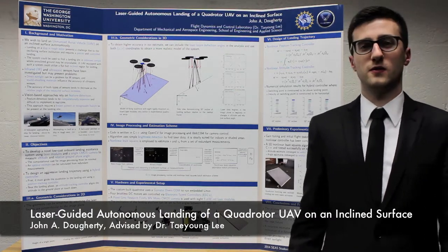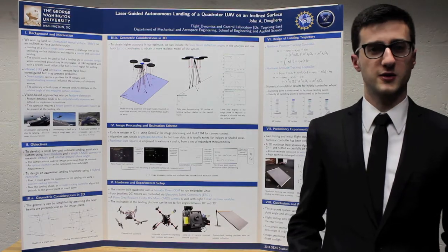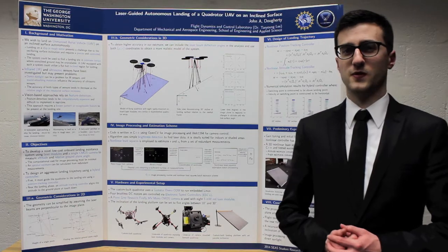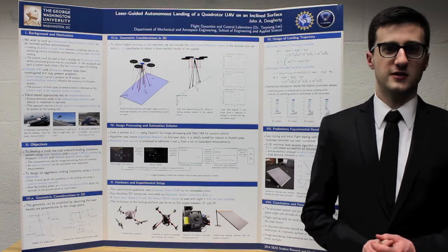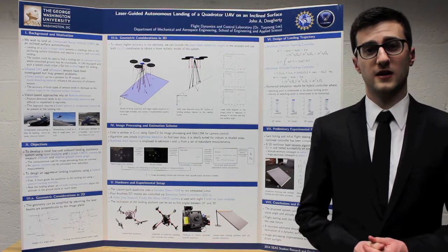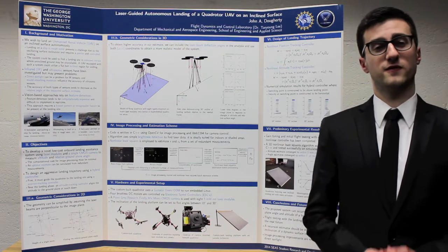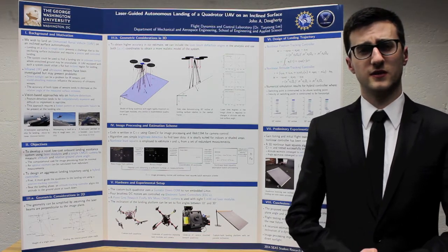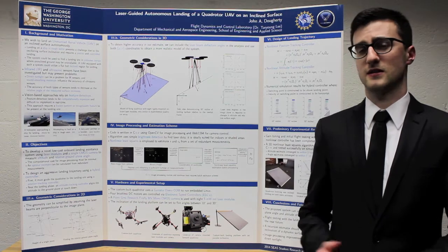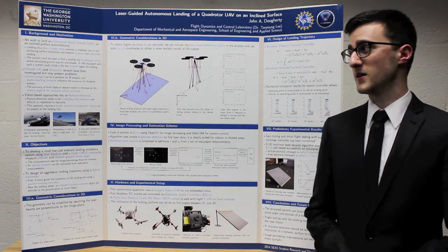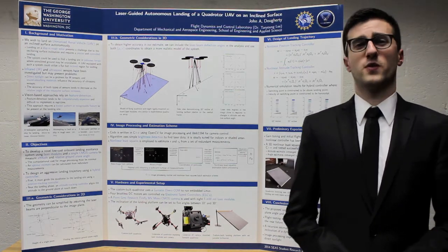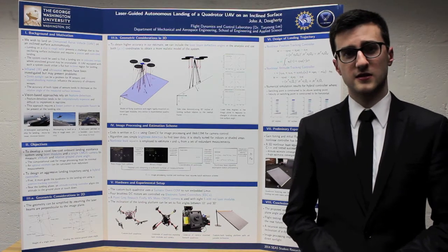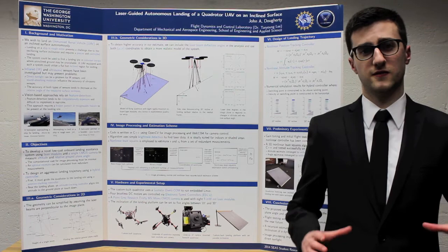Let me begin by giving you a short background and motivation for my project. Unmanned Aerial Vehicles, or UAVs, are being used in a wide variety of applications, both civilian and military — everything from aerial photography to search and rescue missions, weapons delivery systems, and now even Amazon is jumping on board. A quad rotor is one particular type of UAV; it has two pairs of counter-rotating blades situated at the vertices of a square.